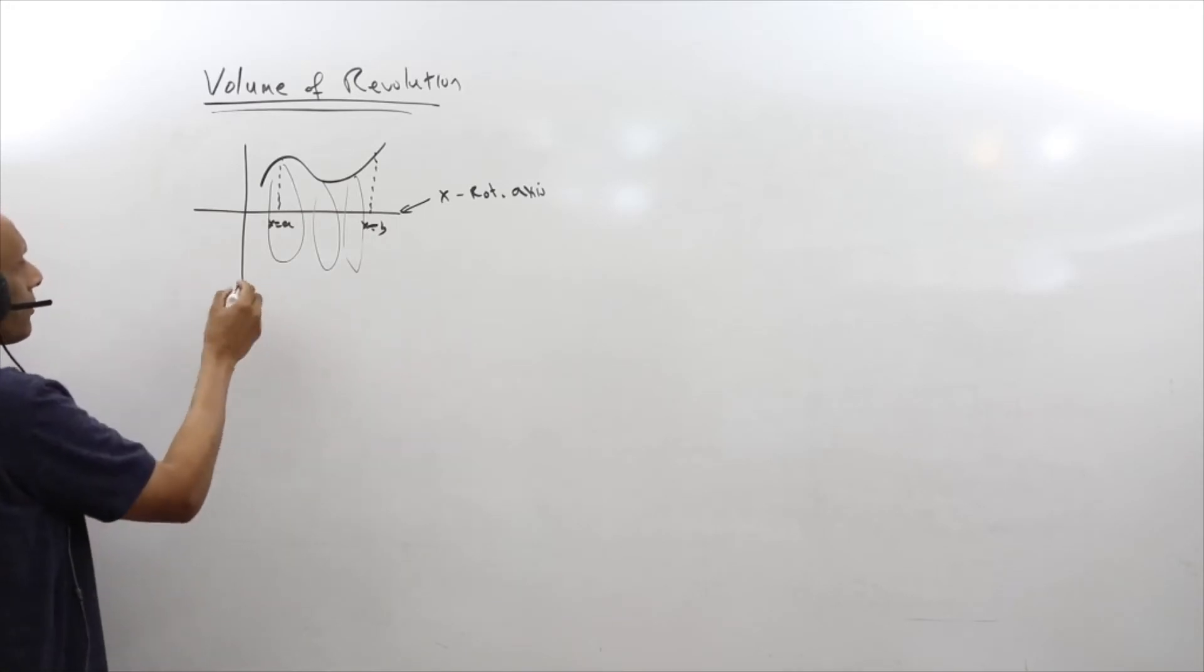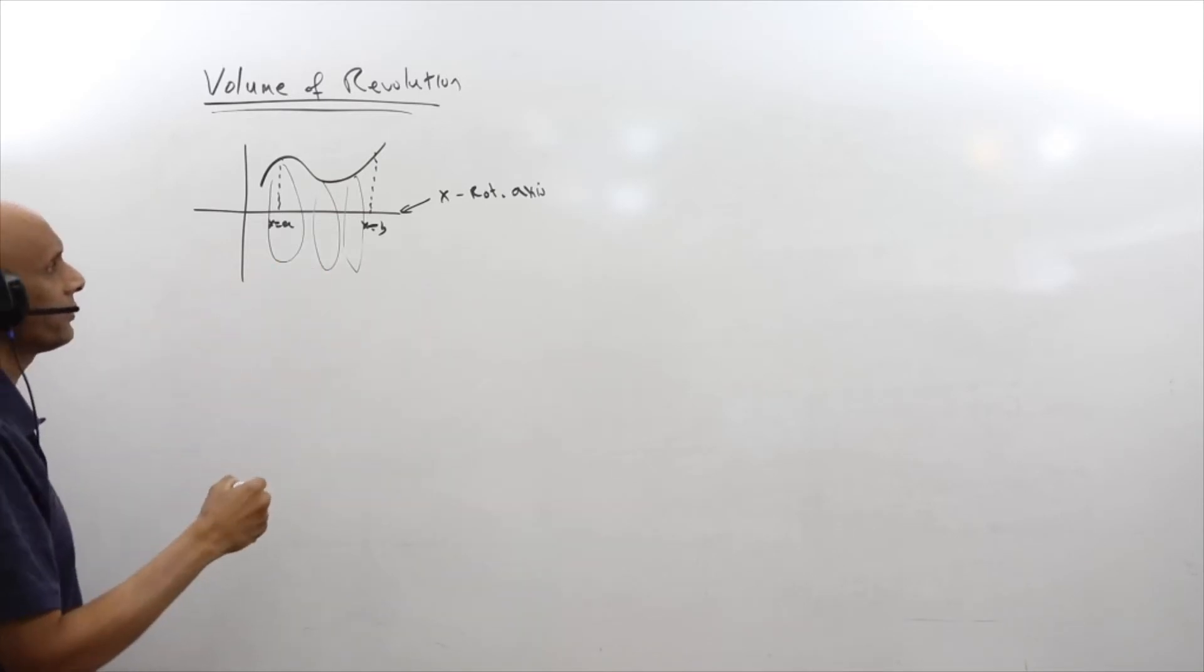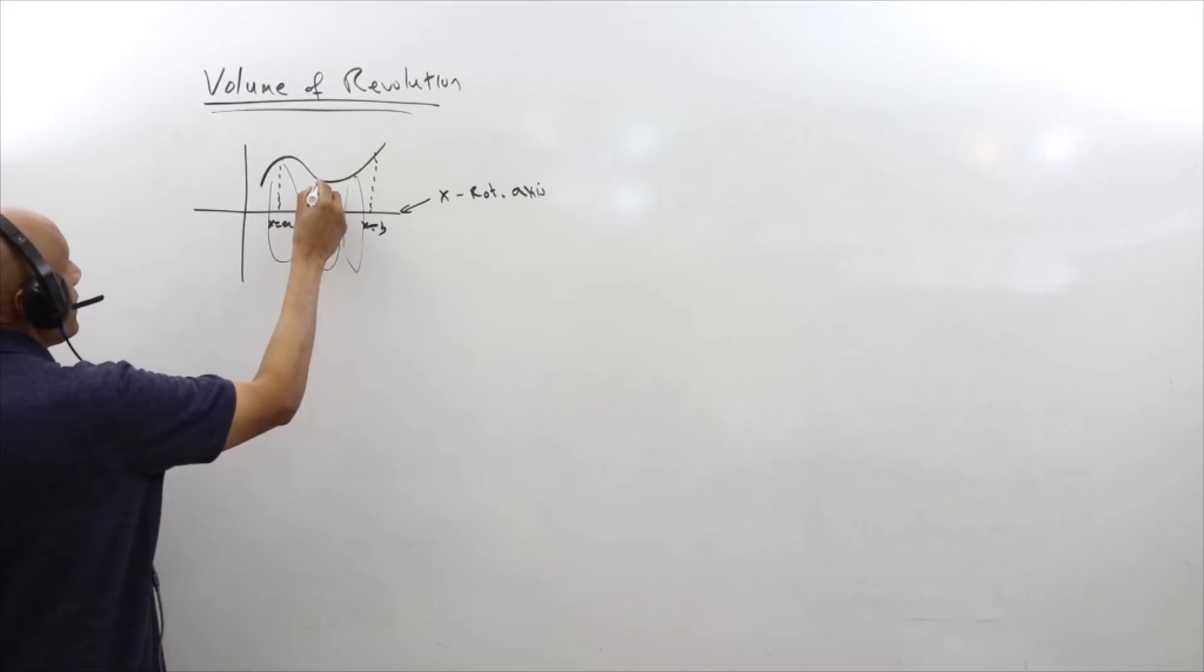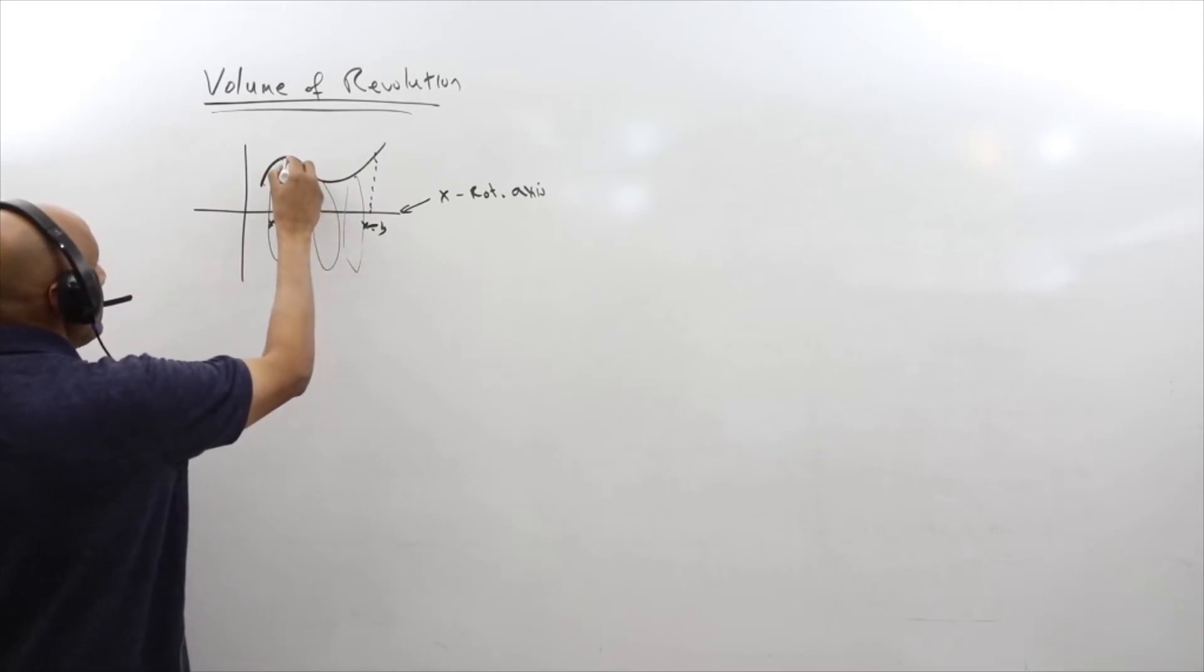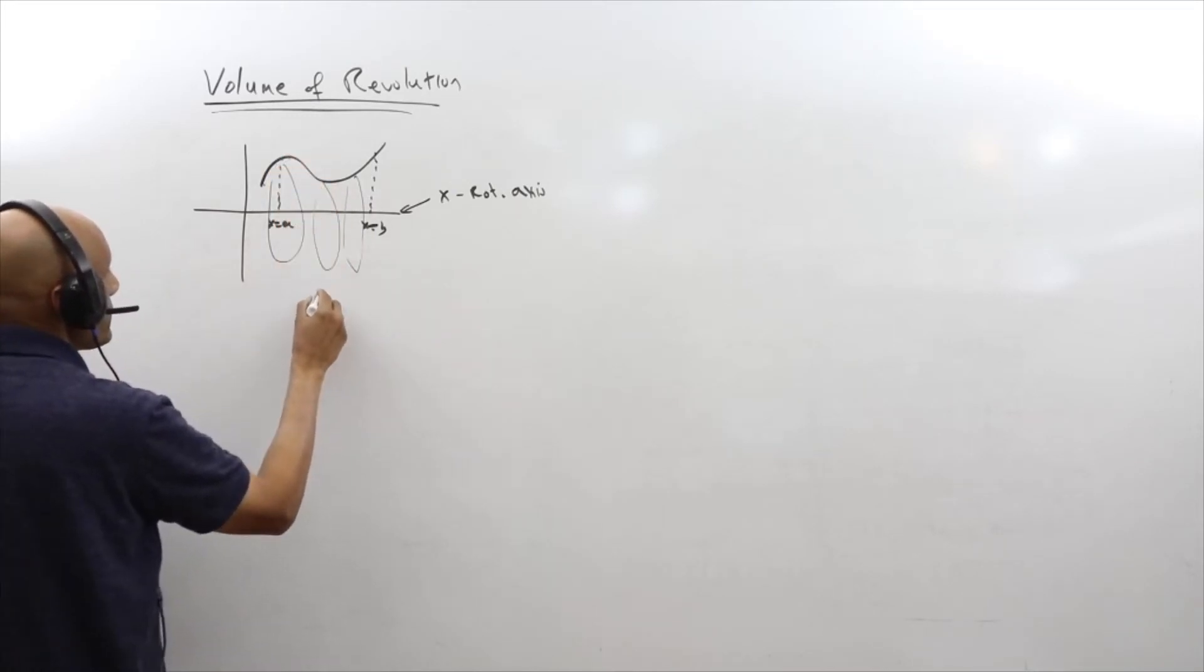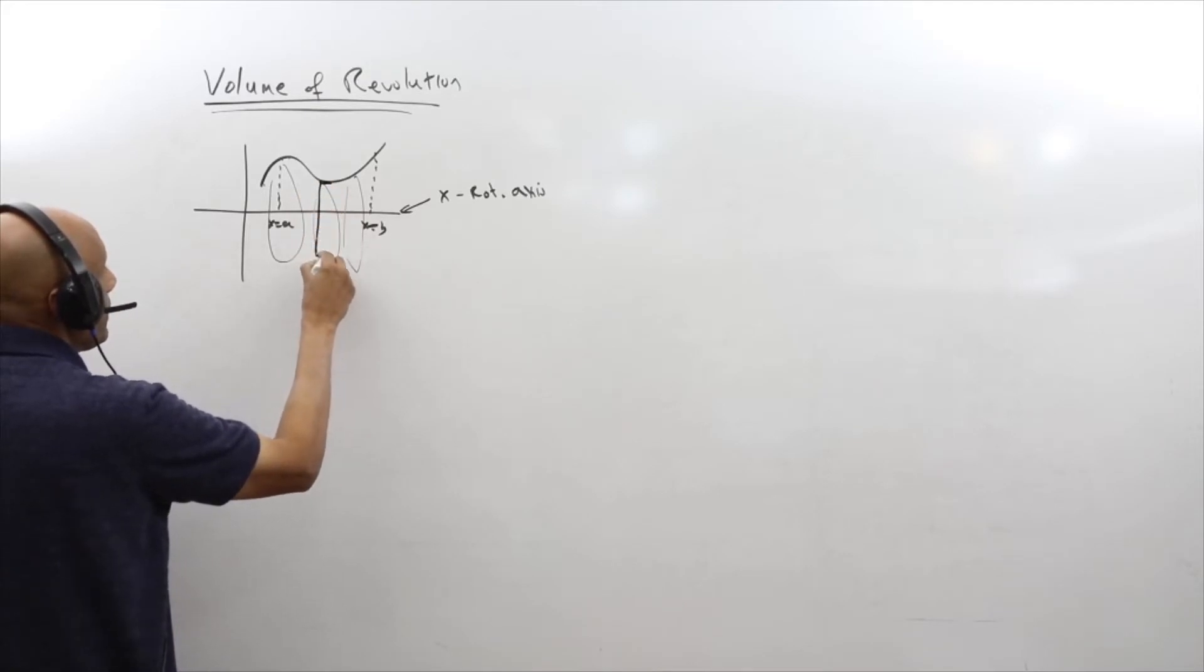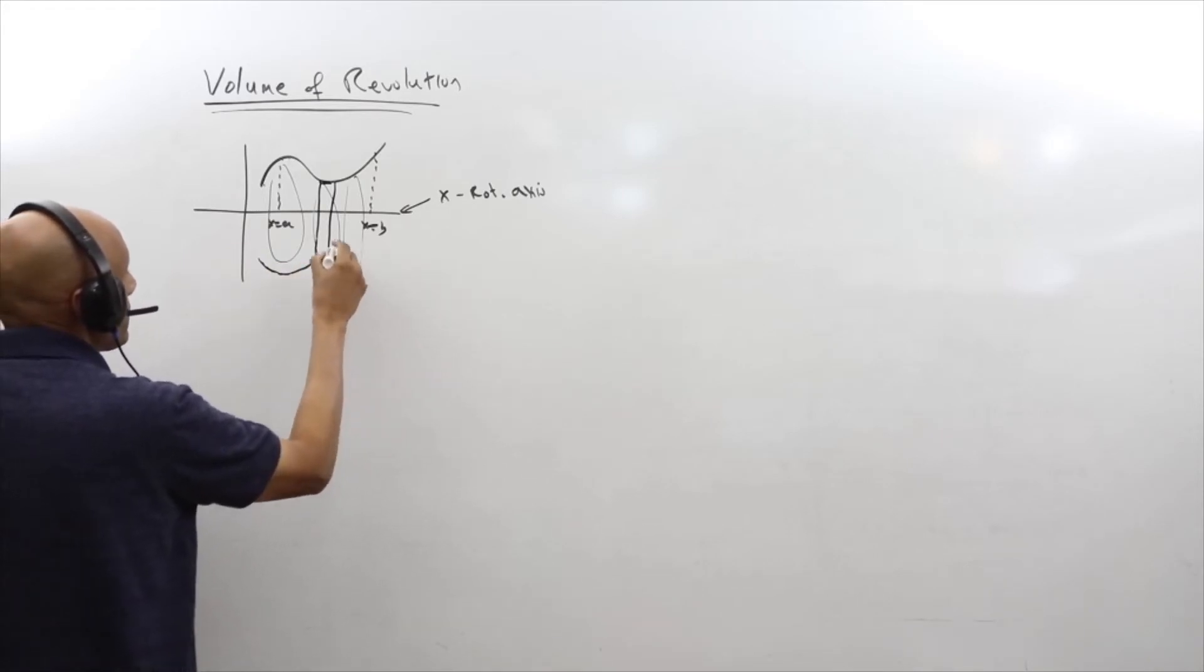The method I'm going to first do is called the disk method. I'll do another video for the shell method, but let's do the disk method first. The idea is that I can decompose this volume of material into little disks. So here's a little disk, it has a length over here. Remember this is kind of if I could do it symmetrically, so it's a disk.